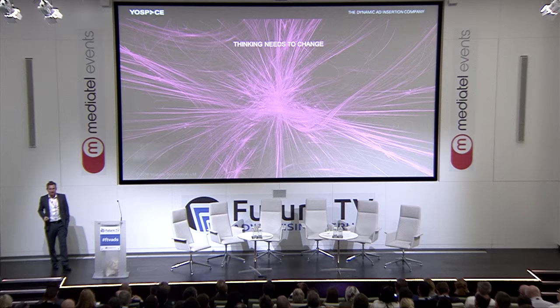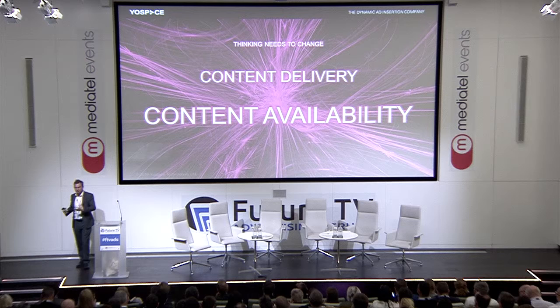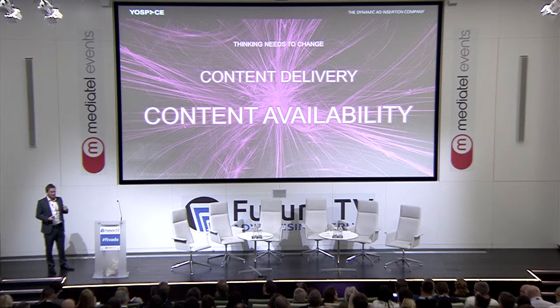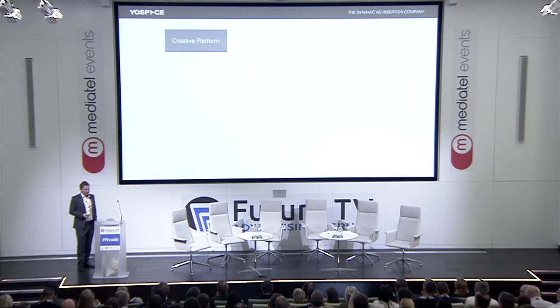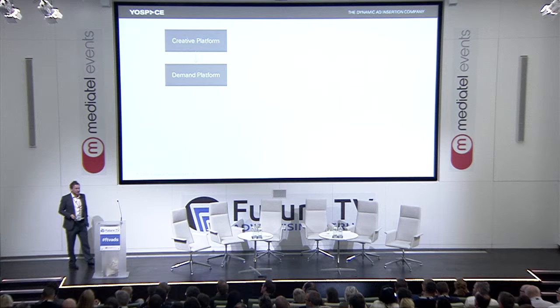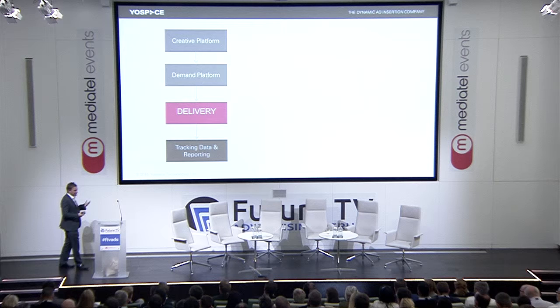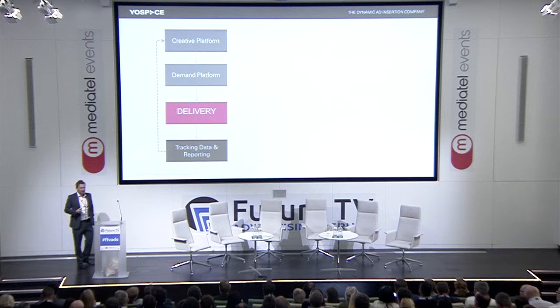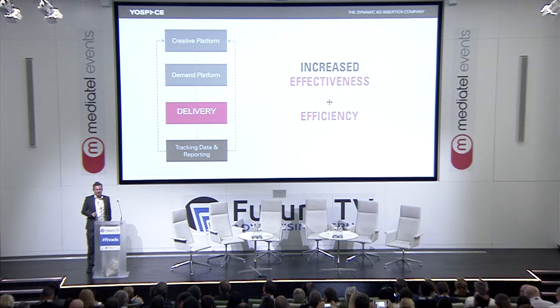The idea is that thinking needs to change from content delivery — the delivery of ads when you need it — to content availability. The content needs to be available to businesses such as ourselves inserting this into the digital domain, in the same way that it has been solved for the broadcast domain. Furthermore, the concept of the creative platform where the ad copy originates, going through to the demand platform, through to our world — the delivery side in OTT — and then the new capability offered by OTT with tracking data and reporting, feeding back all the way up to the creative side, so that there is increased effectiveness of the ad copy itself.